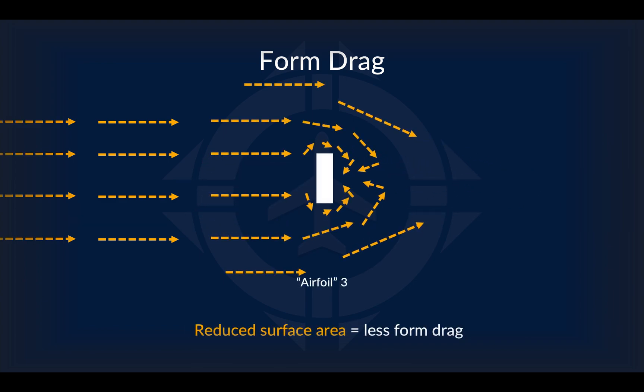The other method to reduce form drag is to decrease the cross-sectional area. It may be helpful to think of this as reducing the surface area of the airfoil that comes into contact with the air. In this way, you create less form drag as you intercept less wind.